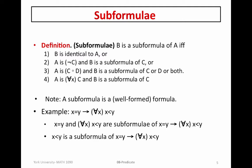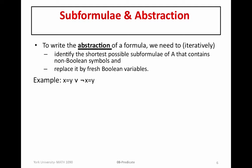Now that we've defined sub-formula, we can define what it means to form the abstraction of a well-formed formula. To write the abstraction of a formula, we need to iteratively identify the shortest possible sub-formula of A that contain non-Boolean symbols, and replace each one of those by fresh Boolean variables. Essentially, the abstraction is going to be a well-formed formula in Boolean logic that looks like the corresponding well-formed formula in predicate logic, stripping out all of the non-Boolean symbols and replacing them by Boolean variables.